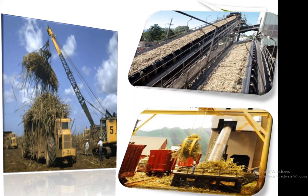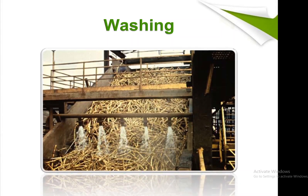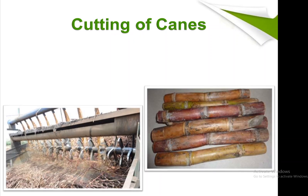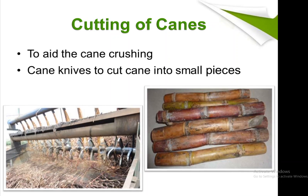After handling and storage, the next step is washing, which is done by pumps and pipes in machines. After washing, the cane is sent to the cutting process, where cane knives cut the cane into small pieces. This step avoids crushing — it is not the crushing process itself.